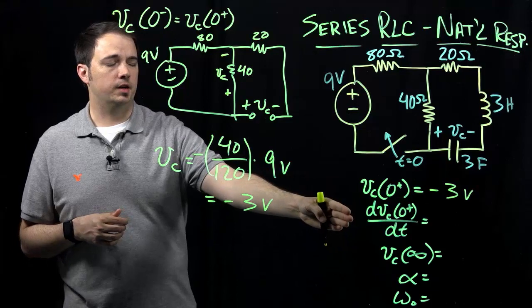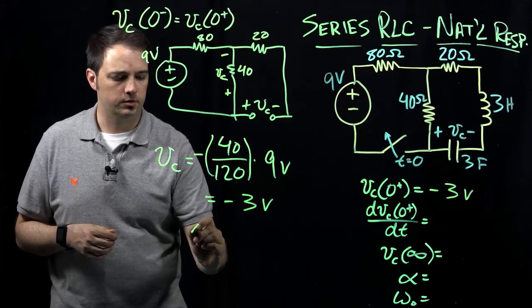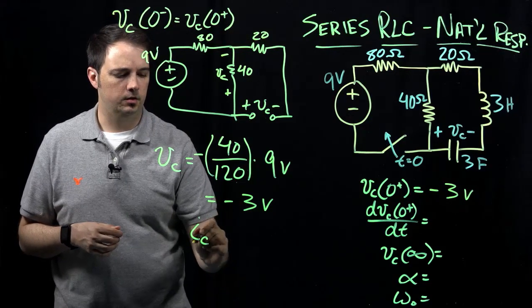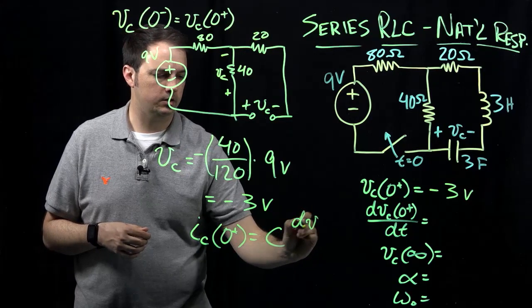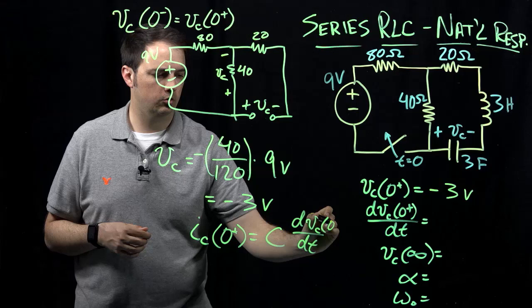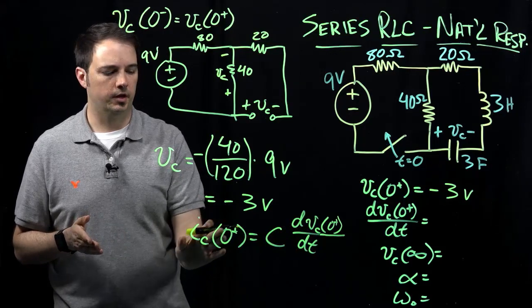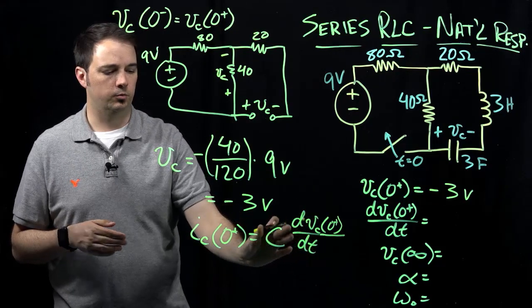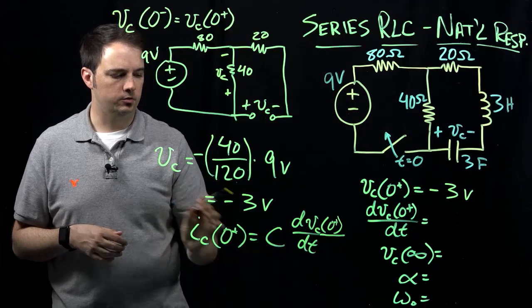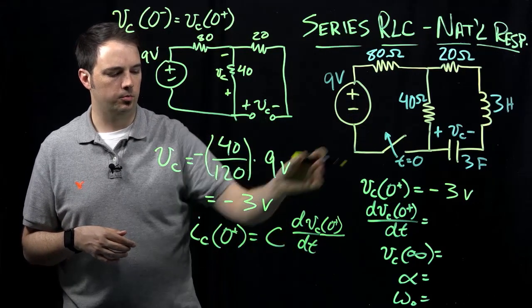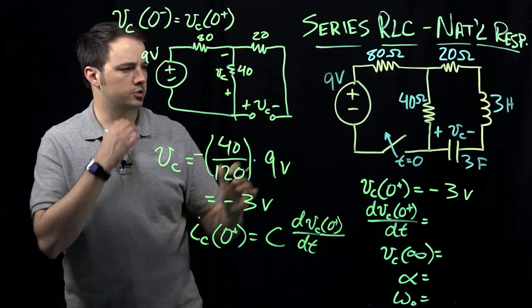Now looking at the second stage: evaluating the derivative of the voltage. We use the expression that the current through the capacitor at time 0 plus equals C times dVc/dt at time 0 plus. This is just the general relationship for any capacitor relating current to the derivative of voltage. We need to find the capacitor current IC at time 0 plus, and we know the capacitance C from the problem.